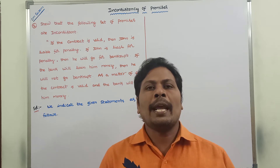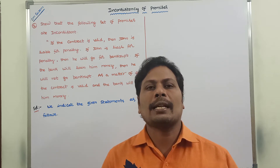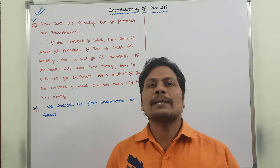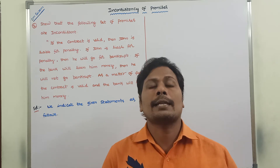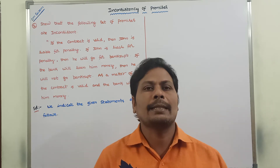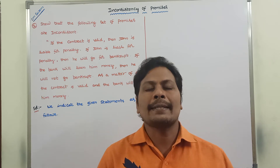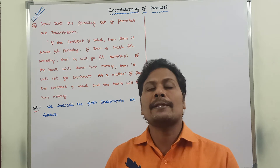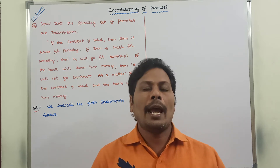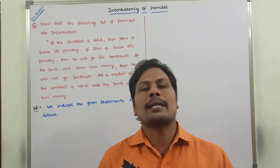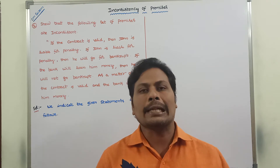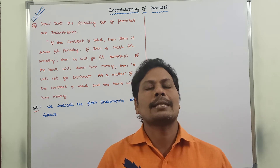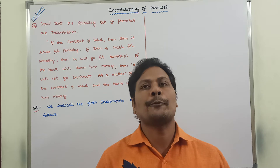Hi friends, today I am giving a lecture on inconsistency of premises. How can you say that the given premises are said to be inconsistent? Inconsistency of premises means the conjunction of the given premises derives a contradiction. Hence, we can say that the given premises are said to be inconsistent. To prove that the given premises are inconsistent, we have to use the indirect method of proof.